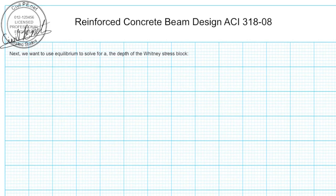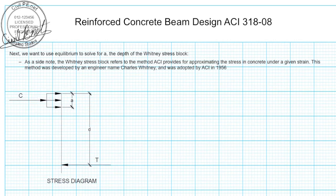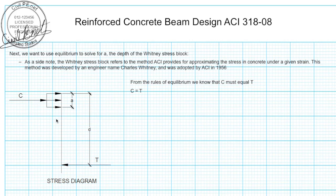Now that we have d, we need to calculate a, the depth of that Whitney stress block, through equilibrium. The Whitney stress block is the method ACI provides for approximating stress in concrete. It's not the only method, but it's one of the simplest, and since 1956 this is what ACI has provided to simplify calculations. We must calculate depth a. We're going to use equilibrium — set C the compression force equal to T the tension force — and use that equation to calculate a. We can do this because the beam is under equilibrium, so the compression force must equal the tension force at every section.